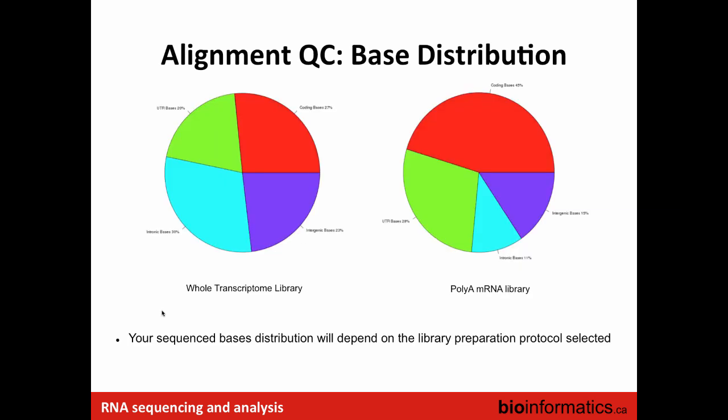Base distribution takes the aligned bases and figures out where in the transcriptome they are aligning — intronic region, exonic region, intergenic region, and so on. This confirms the type of library you've used. If you use total RNA, you'll see more intergenic regions. If you use poly-A selection, you should see more coding or exonic bases. Any discrepancy, and you want to go back and check why.